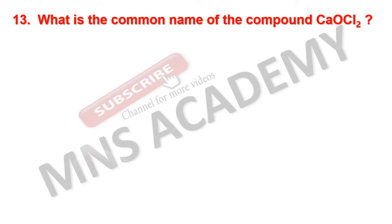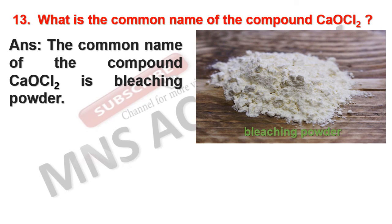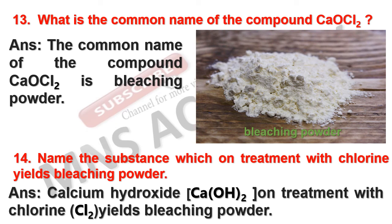What is the common name of the compound calcium oxychloride? The common name of calcium oxychloride is bleaching powder. Name the substance which on treatment with chlorine yields bleaching powder. The substance is calcium hydroxide, Ca(OH)₂. On treatment with chlorine, calcium hydroxide yields bleaching powder.